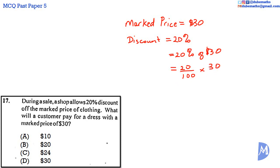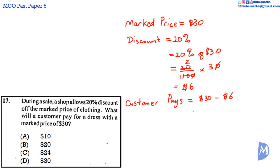Canceling: 10 into 100 gives 10; 10 into 10 gives 1; 10 into 20 gives 2. Then 2 multiplied by 3 equals 6, so the discount is $6. Our customer will pay $30 minus $6, which is equal to $24. The answer is C.